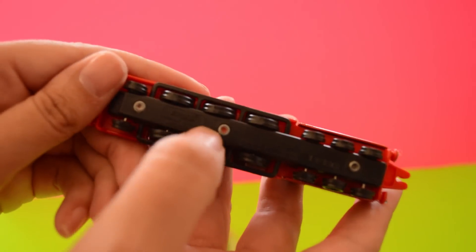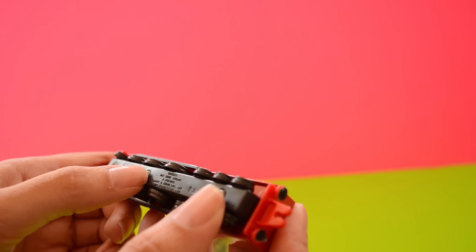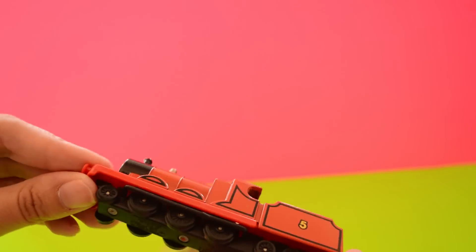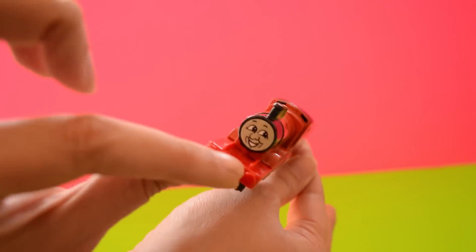The bottom says Ertl, which is the same as our die-cast John Deere tractor, and it says Thomas the Tank Engine and Friends 1984. George Orwell, eat your heart out.